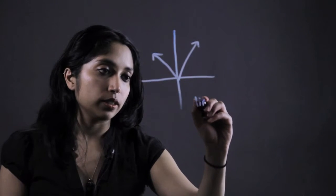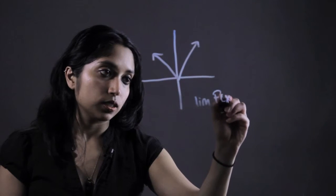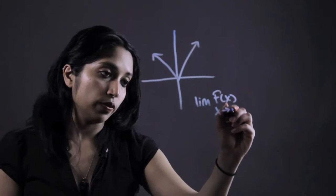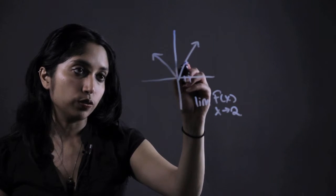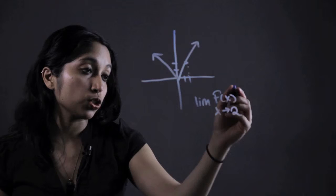And we want to define the limit of f(x) as x approaches the value 2. So what value does that approach? Well, if you go up on your graph, you're going to realize it's just 2.